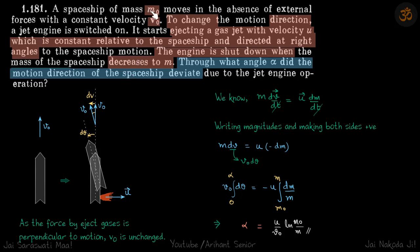In this problem we have a spaceship which is moving with a constant velocity v₀. To change the direction of its motion, a gas is ejected with velocity u relative to the spaceship and is directed at right angles to the spaceship motion. So the u is ejected at right angle to the direction of motion.